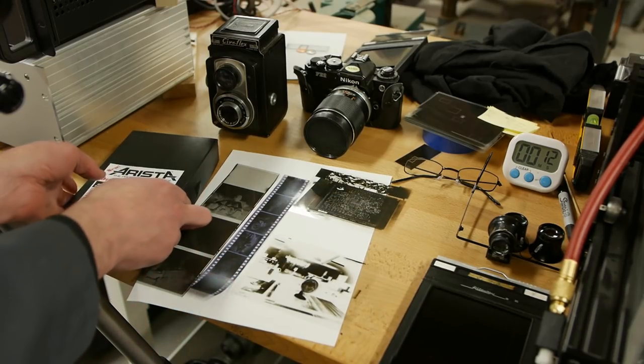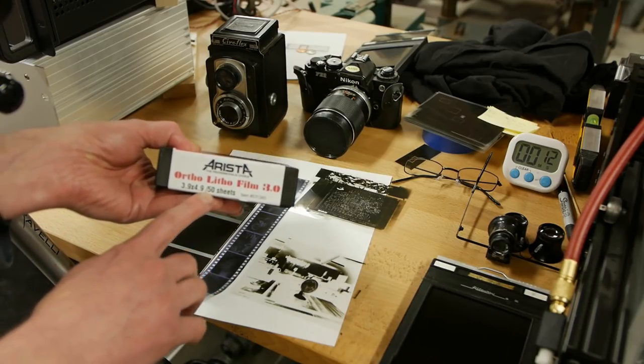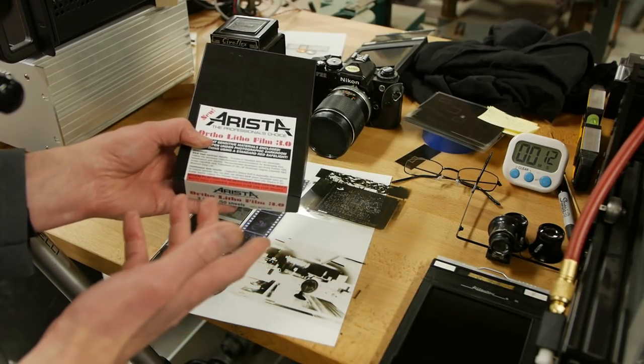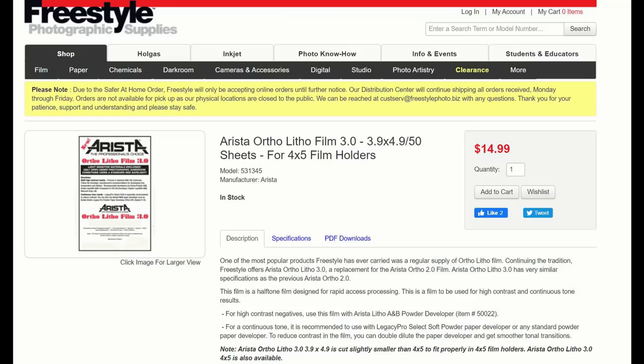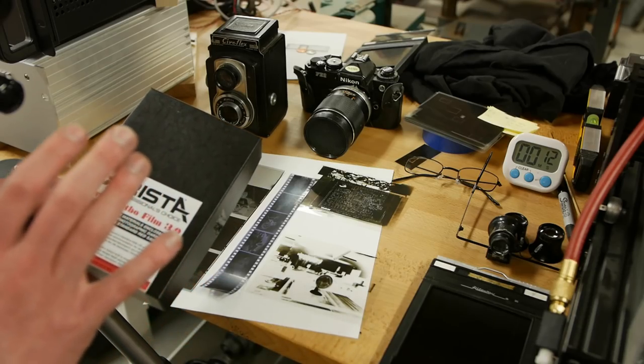Oh, and it's also cheap. I forgot to mention. This box of 50 sheets cost about $20. So it's almost as cheap per frame as 35 millimeter, and actually cheaper per frame than medium format even, which is kind of funny.